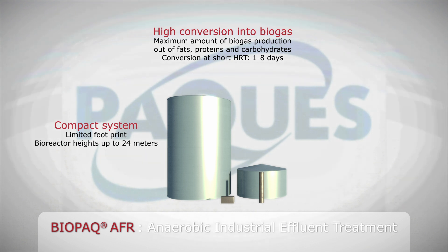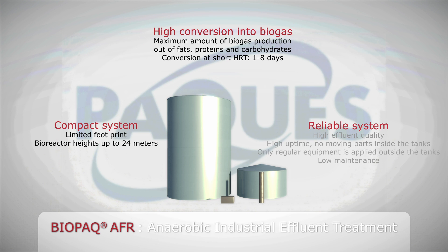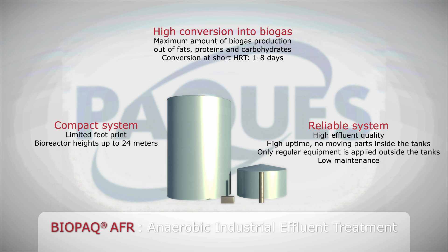The height of the bioreactor can be up to 24 meters. The wastewater is efficiently purified, resulting in a constant high effluent quality. The system is reliable with a high uptime, since there are no moving parts inside the tanks. The process only uses regular rotating equipment, such as centrifugal pumps placed outside the tanks. The AFR technology is a reliable, highly efficient process with maximized biogas production, excellent effluent quality and low maintenance requirements.